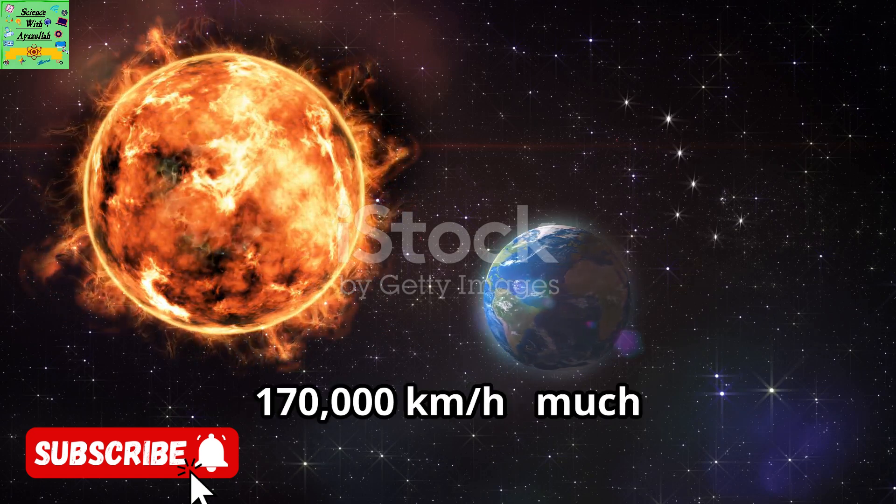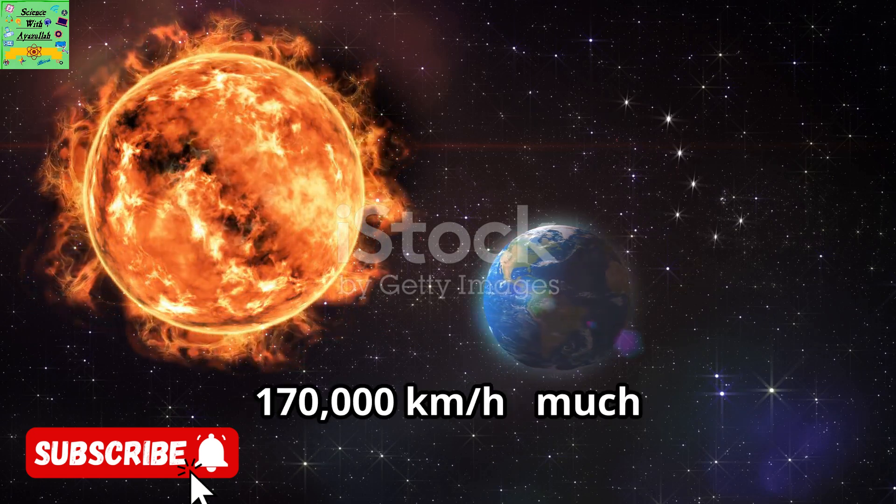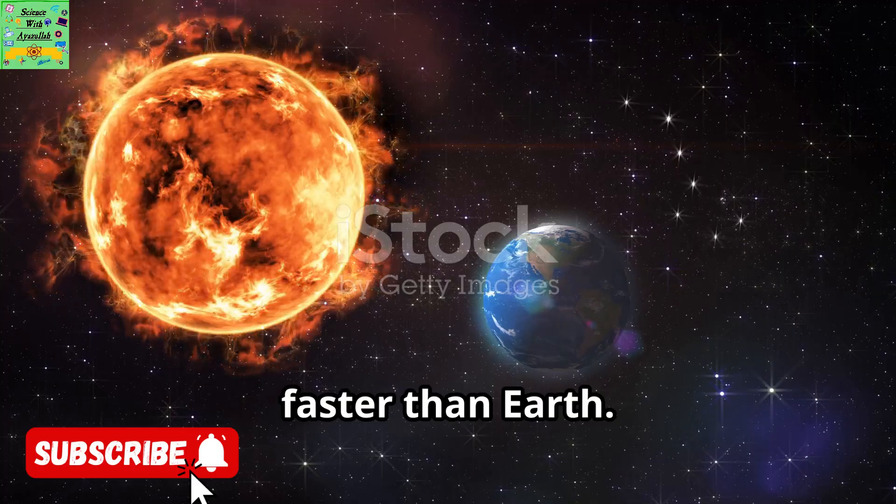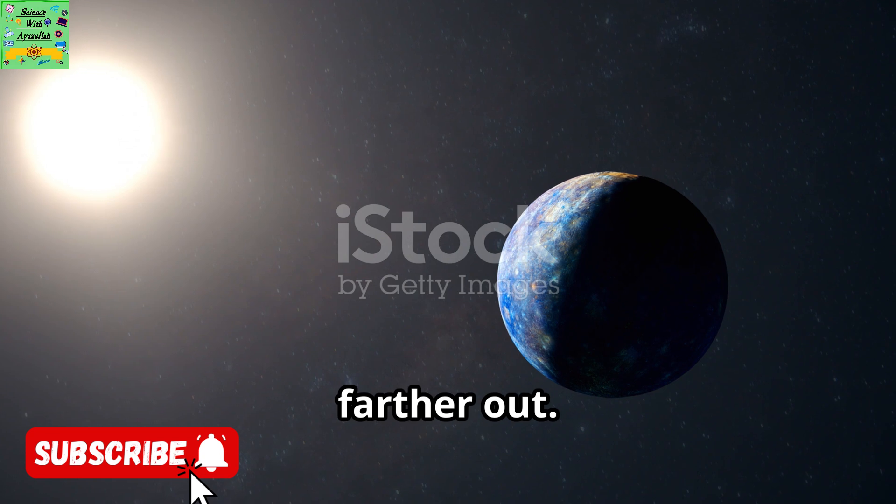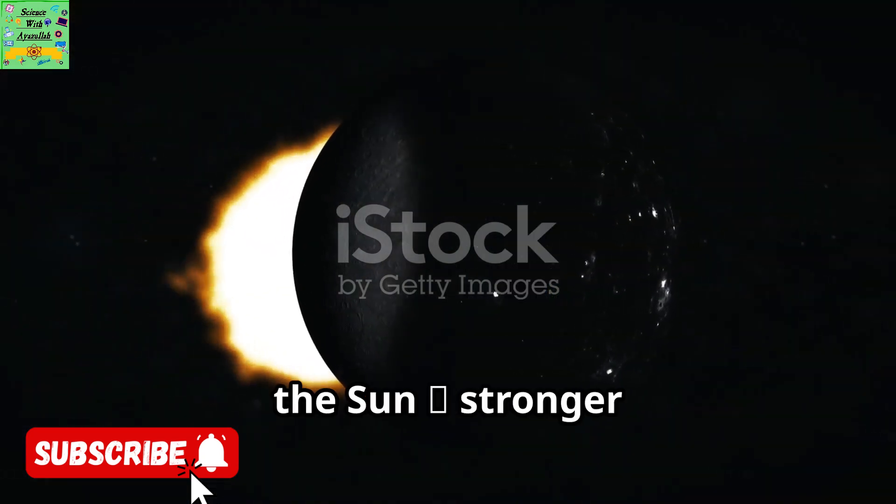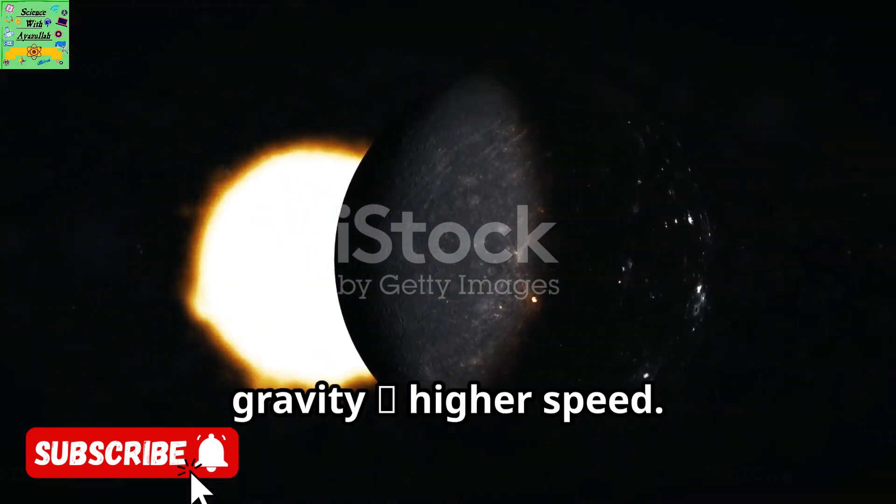Remember, Mercury 170,000 kilometers per hour, much faster than Earth. Earth moves at about 100,000 kilometers per hour, slower because it's farther out. Fact 1: Closer to the Sun, stronger gravity, higher speed.